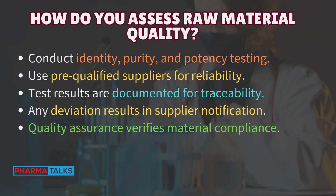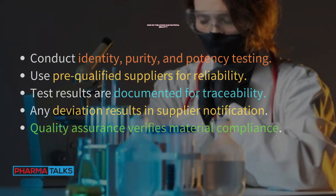Managing resources in pharmaceutical production: How do you assess raw material quality? Conduct identity, purity, and potency testing. Use pre-qualified suppliers for reliability. Test results are documented for traceability. Any deviation results in supplier notification. Quality assurance verifies material compliance.